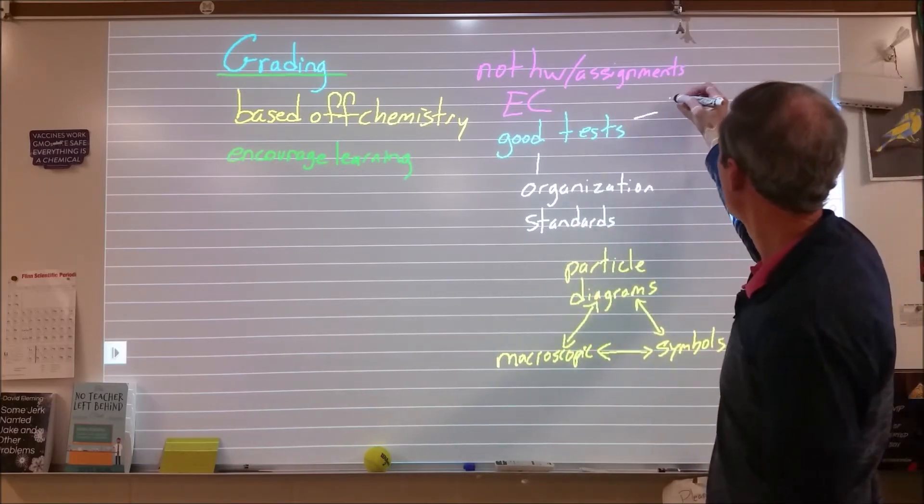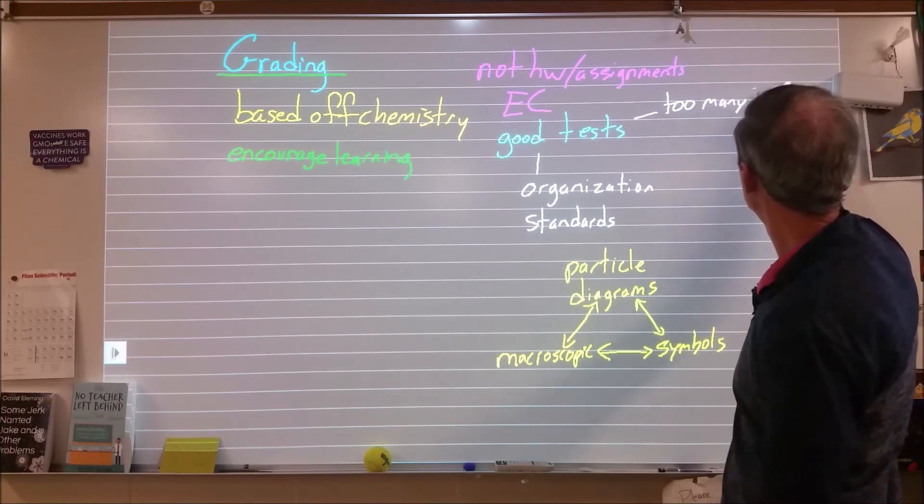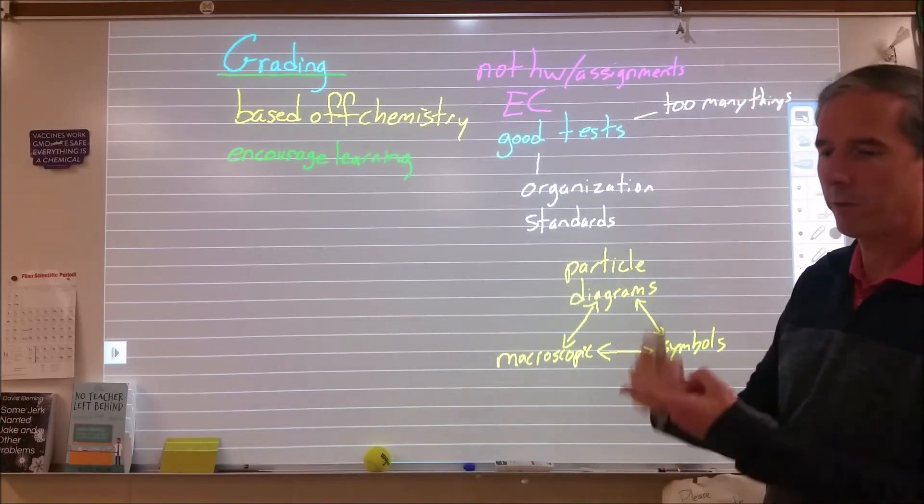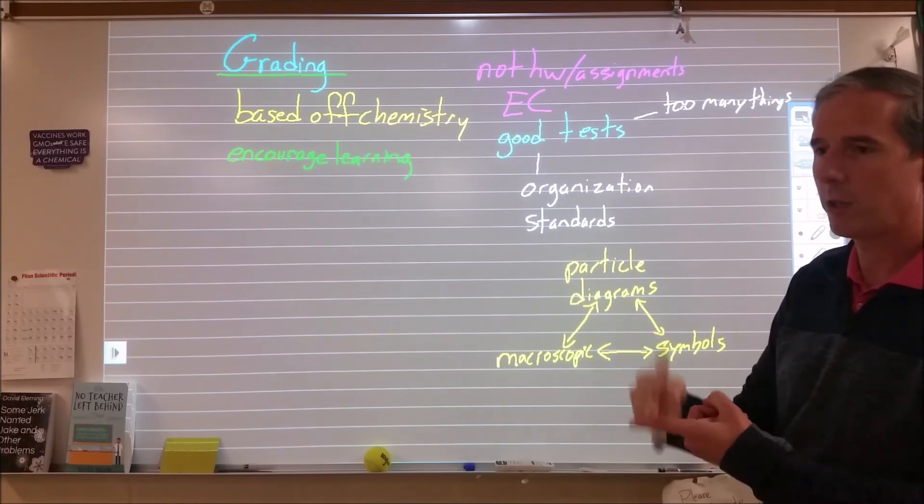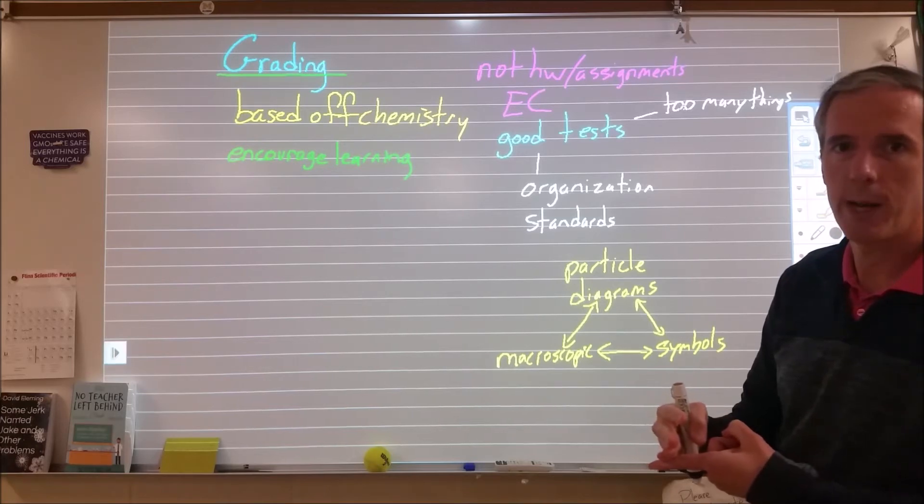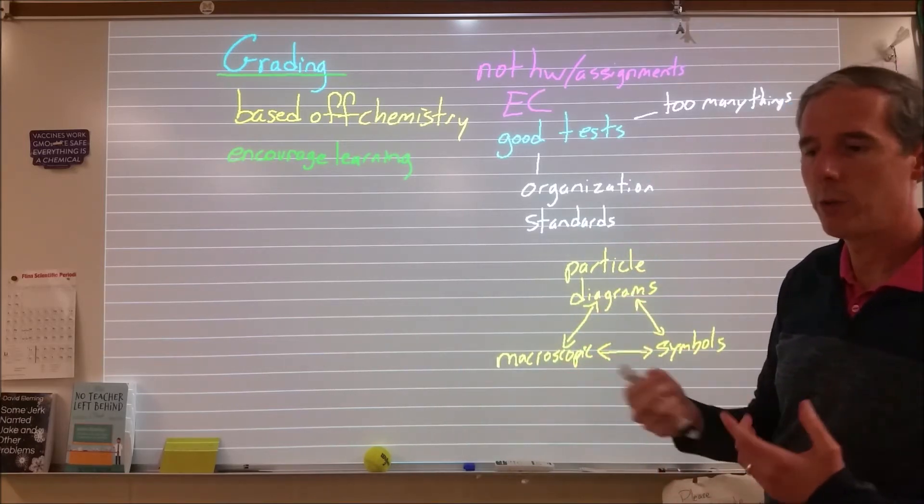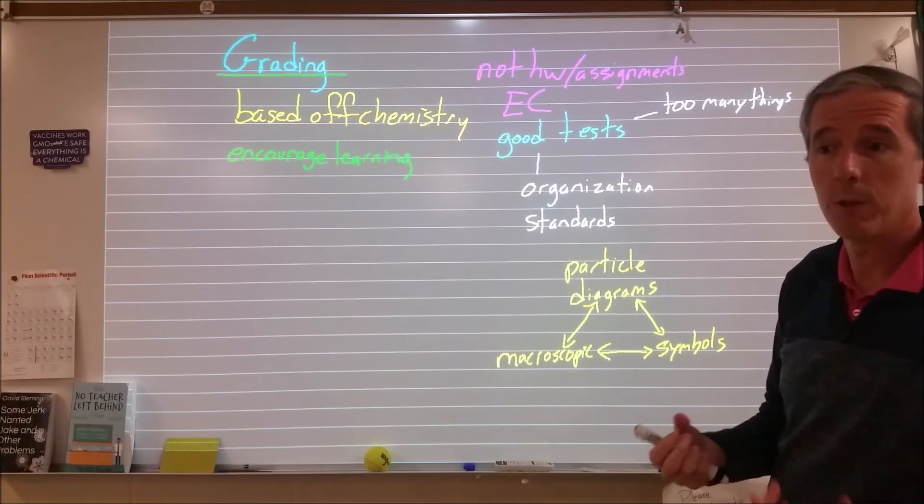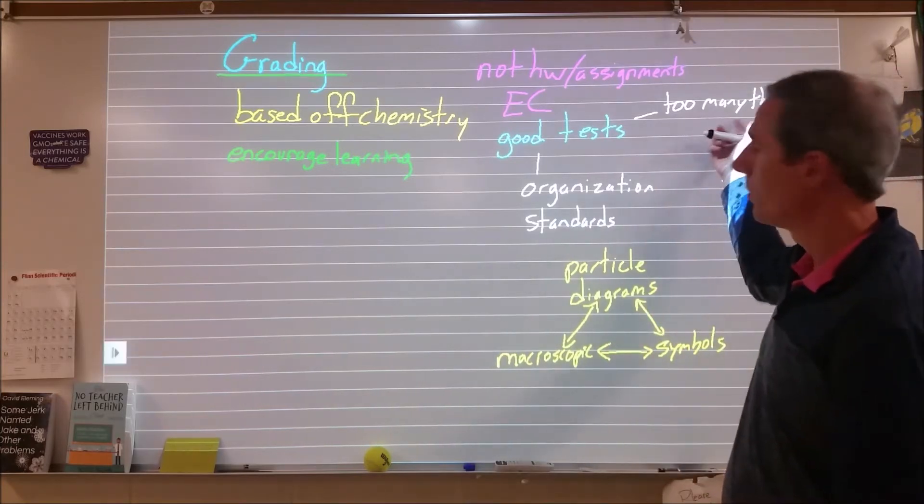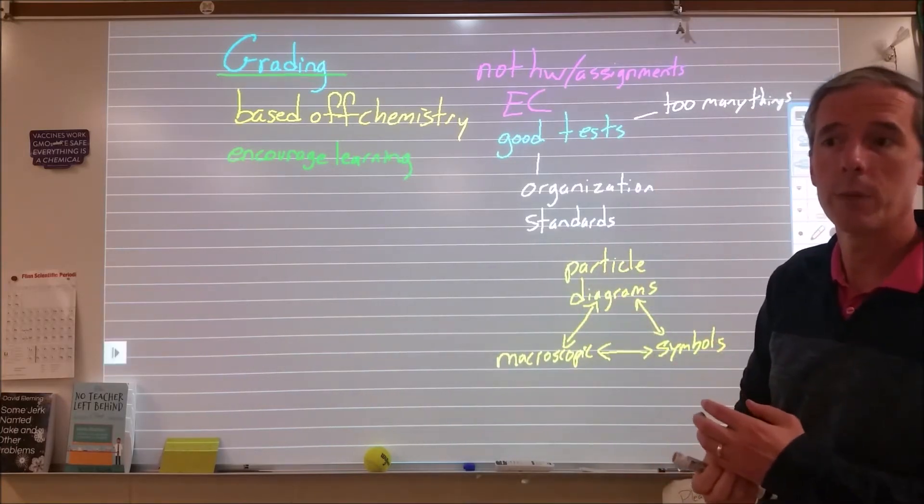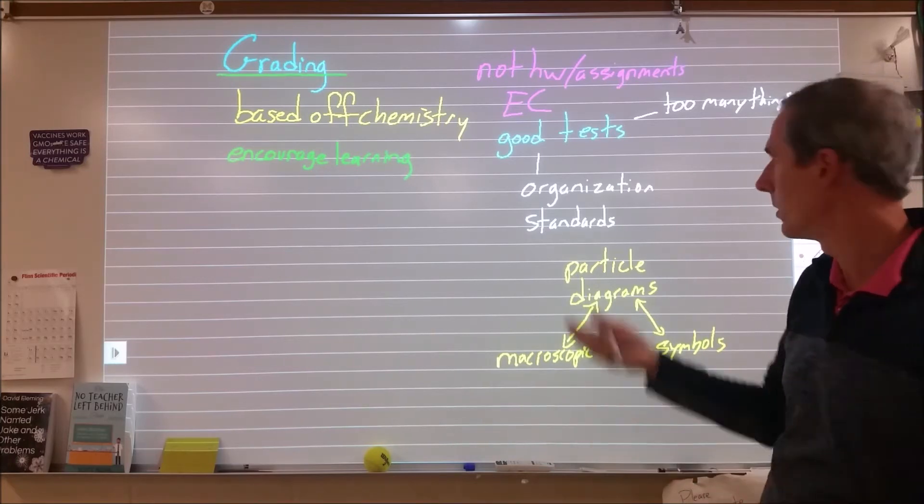One way that can fall apart is too many things. So if you get a test question and it's convert this and then do this calculation and then draw it at the particle level diagram and then add in this representation for the reaction. Well if you get any one of those wrong, you don't know what you did wrong. There's no way to draw feedback both for the teacher and for the student. So too many things clustered into one assessment is not a healthy thing for good tests.